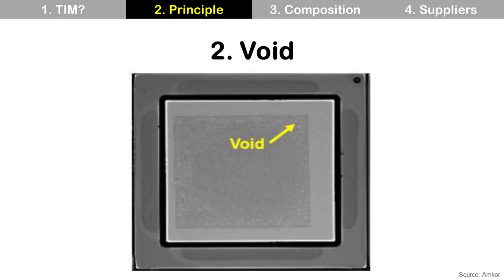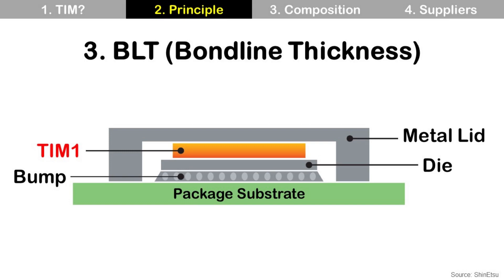Second is void. It is the same story as coverage — we need to minimize void as much as possible, because void means air gap, and it prevents heat conduction. Third is bondline thickness. Bondline thickness should be just good enough to fill the air gap and should not be too thick. If we increase the BLT of TIM, it can decrease void, but it also increases thermal resistance at the same time, which degrades heat conduction.